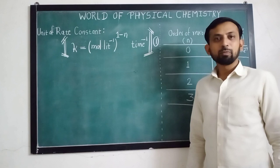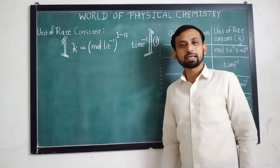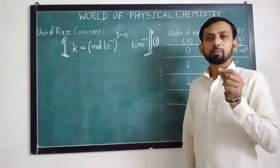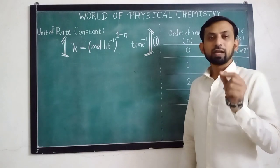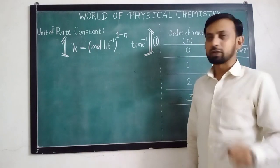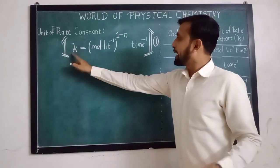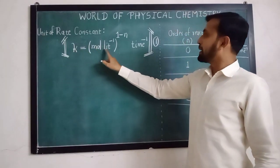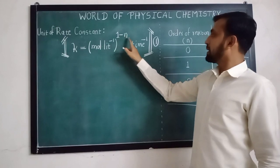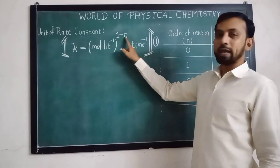Hello friends, welcome to my channel World of Physical Chemistry. In this video we will learn a simple and best trick to derive the unit of rate constant. The general expression is: K is equal to mol per liter raised to the power of 1 minus n, into per time, where n is the order of reaction.